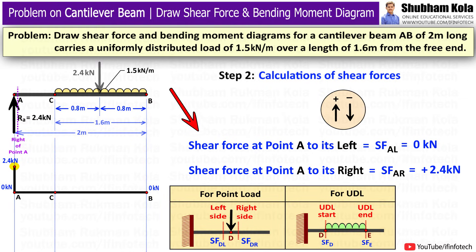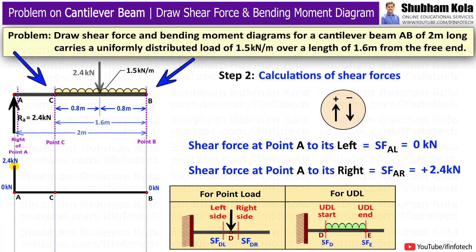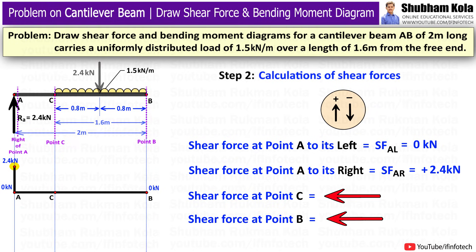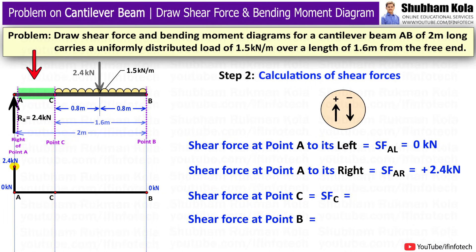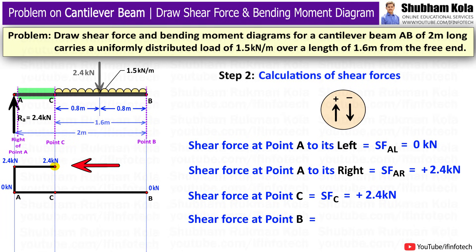An important note: when calculating shear force at a point load, you can find values on both left and right sides. But for a uniformly distributed load (UDL), calculate shear force at the start point and end point of the UDL — that is, at points C and B. Between the right side of point A and point C there is no load, so shear force remains constant at 2.4 kN, and I draw a horizontal line at 2.4 kN up to point C.